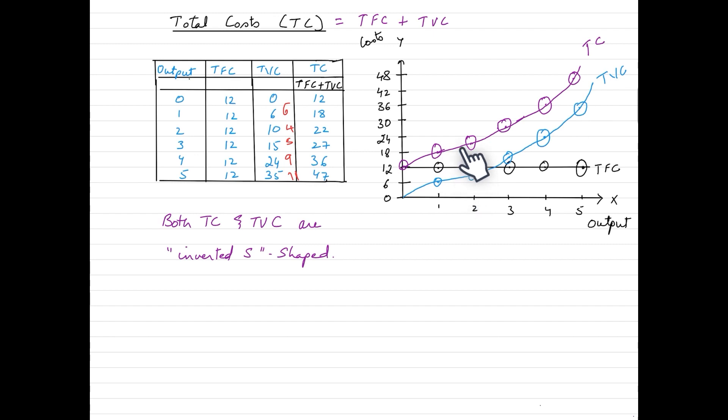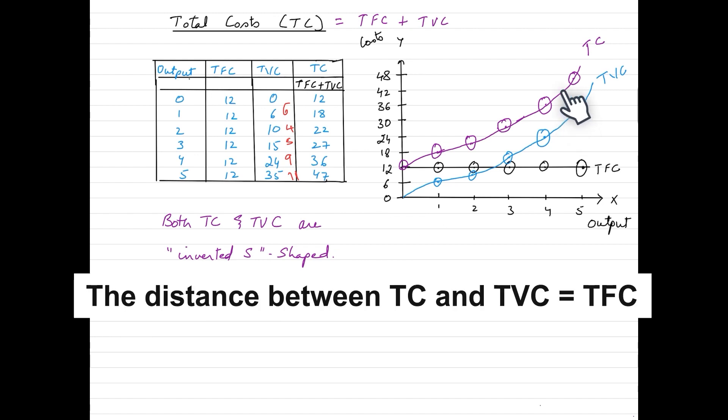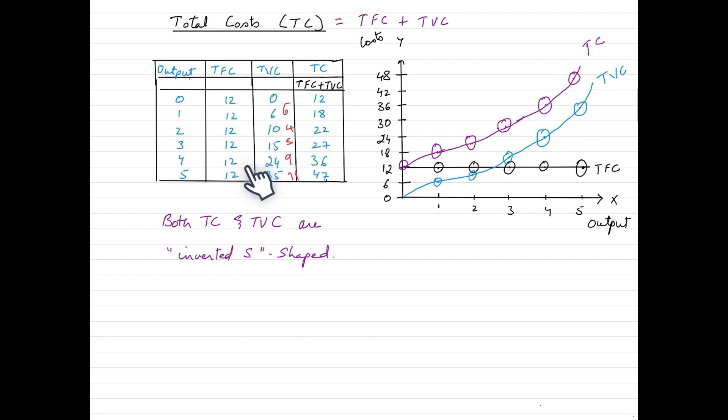Hence TC and TVC both would have the same shape which is an inverted S shape. The distance between the TC and TVC curve is basically a representation of the fixed costs which are constant through all levels of output.